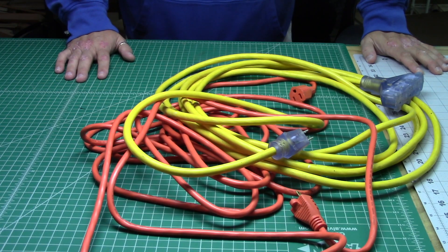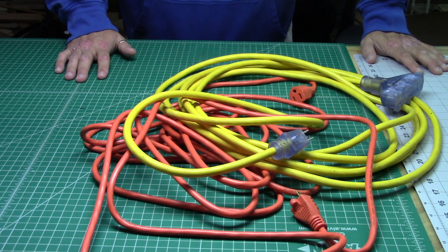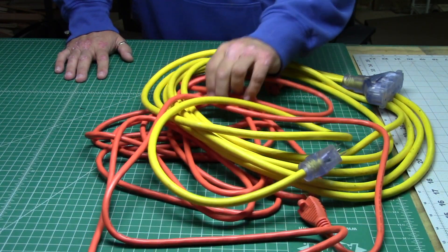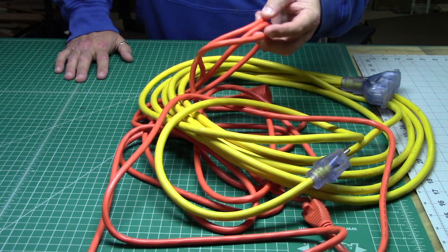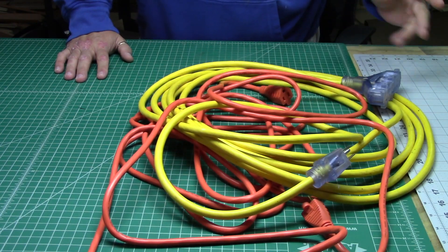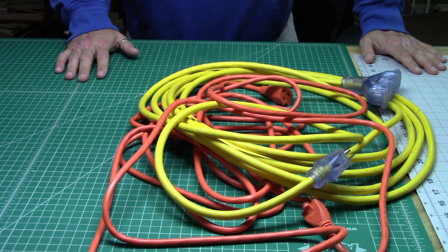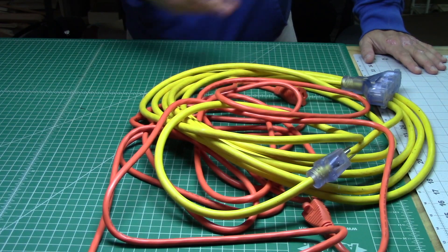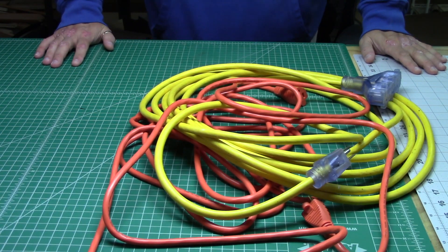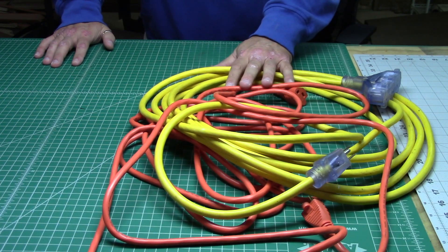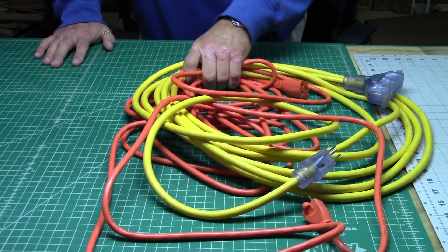But if you want to make it simple on yourself, make sure each one of your cords is a different color based on the gauge it is. You can get them in any color you want. I can get this heavy duty one in bright green if I want it. I can get this one in black or red or forest green or whatever. So make sure whatever cords you're buying, when you buy one in a different size than the others, change the color so they're easier for you to identify.